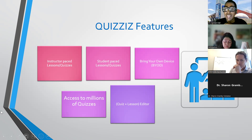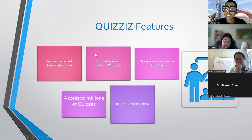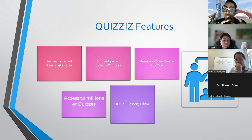The second type of feature is student-paced lessons. Remember, we have multi-levels of learners in our classrooms. What can be done for these lessons is you can tailor it to fit those different variations of learners that you have within your classrooms.